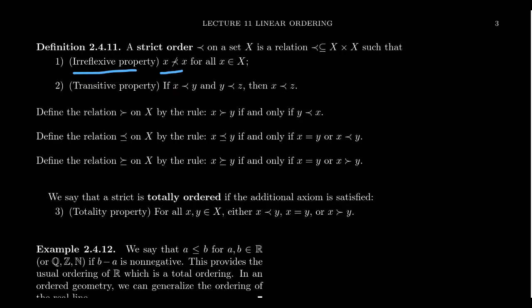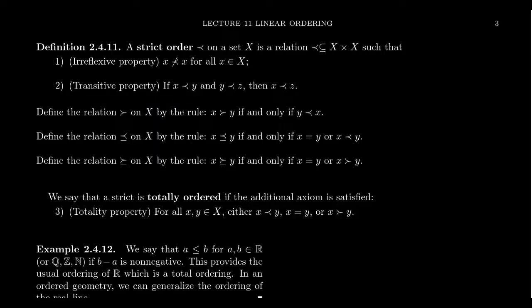We don't allow an element to be related to itself. We also require that it be transitive — the same transitivity axiom you see with an equivalence relation. If X is related to Y and Y is related to Z, then it must be the case that X is related to Z. This gives us a strict order, often thought of as less than: if X is less than Y and Y is less than Z, then X is less than Z. You can't be less than yourself.